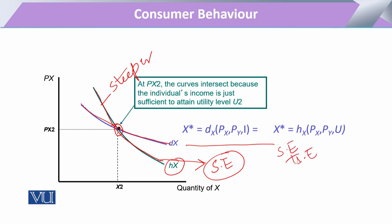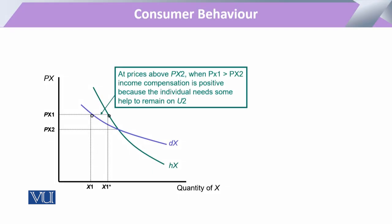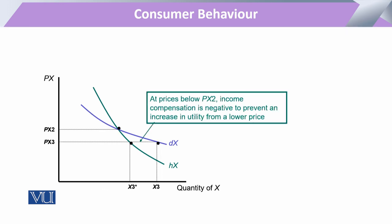In compensated demand curves, changes in various prices are compensated by a corresponding change in the consumer's nominal income. So unlike Marshallian demand, nominal income is not held constant in the compensated demand framework — it varies to offset the real income effect of any price change.